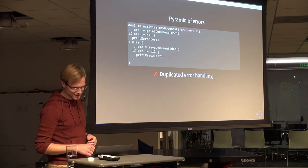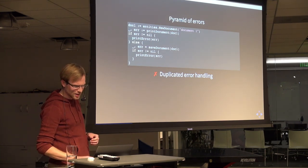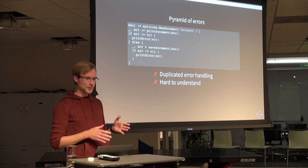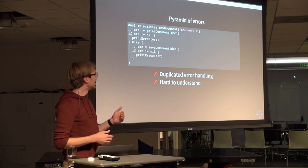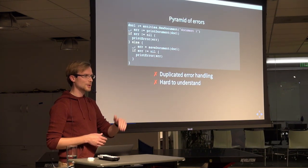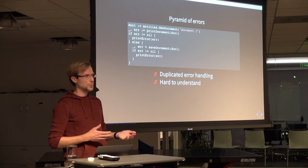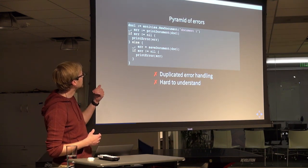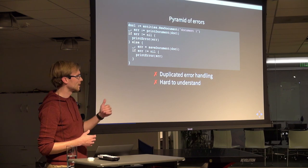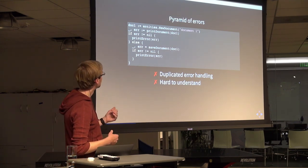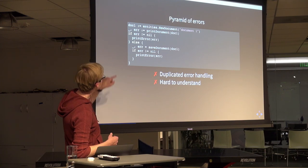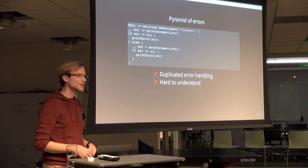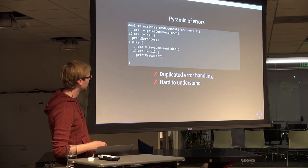And that just hurts my eyes. Another problem I have with this is it's hard to understand. All that's really happening here is just two steps — I'm printing out a document and then saving the document. But even though I'm only doing two things, I can't tell that by looking at this. I should be able to look at this and in a quarter of a second know exactly all the steps, and I can't really do that with this.